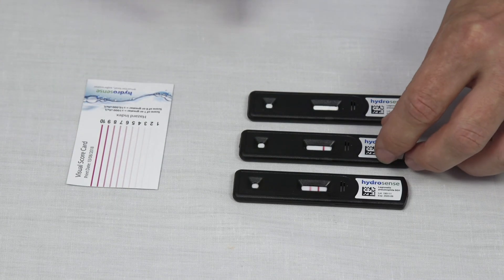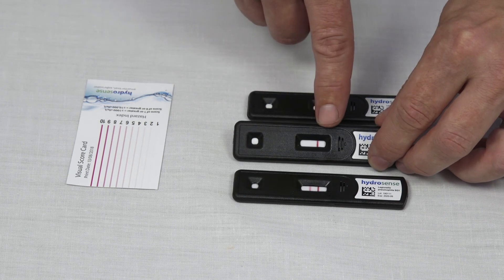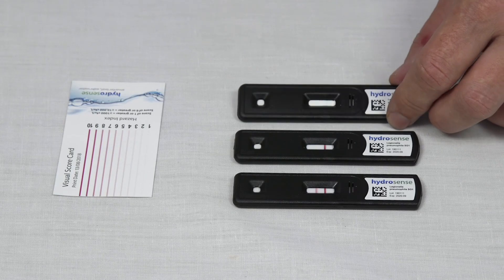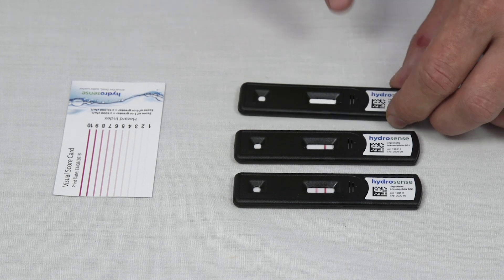If the test shows one line in the control line position, then the test is negative and Legionella pneumophila serogroup 1 has not been detected. If no control line is present, then the test is invalid and should be repeated.